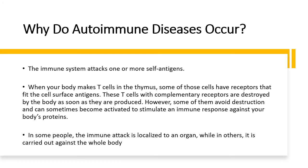When your body makes your T cells in the thymus, some of those cells will come out with receptors that fit onto the cell surface antigens of your own cells. These T cells are usually destroyed as soon as they are produced, because if the T cell receptors fit with your own cells, those T cells will recognize your cells as antigens and stimulate an immune response against them. But sometimes some of them are able to escape, and when they escape, they become activated and stimulate an immune response that attacks certain cells within the body.